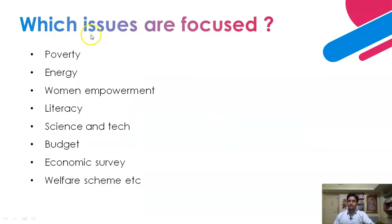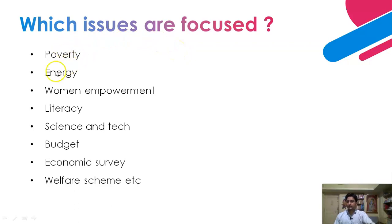Moving ahead — which issues are focused in Yojana? In this magazine, various issues are focused. Generally, every month, one particular issue is discussed in detail. So, if we read Yojana for one full year, almost twelve topics or twelve issues can be covered well. Issues like poverty, energy, women empowerment, literacy, science and technology, budget, economic survey, and welfare schemes — all these kinds of issues are covered.